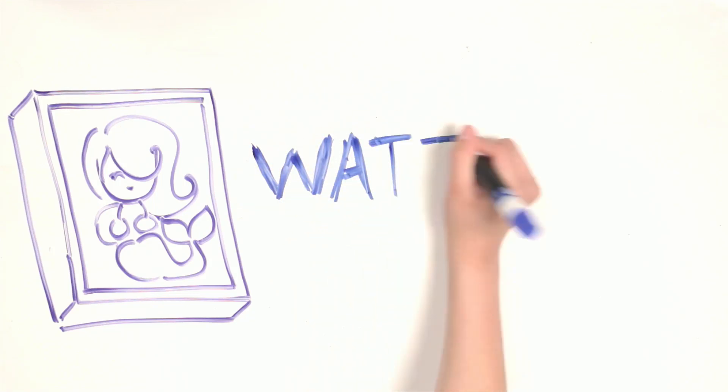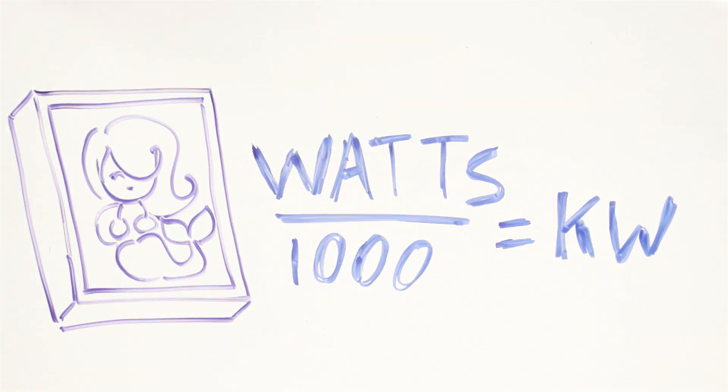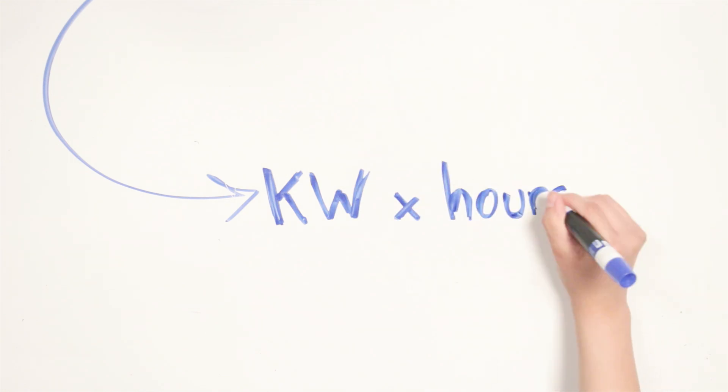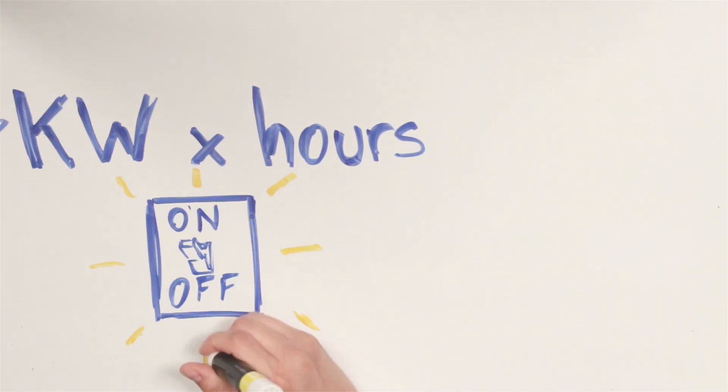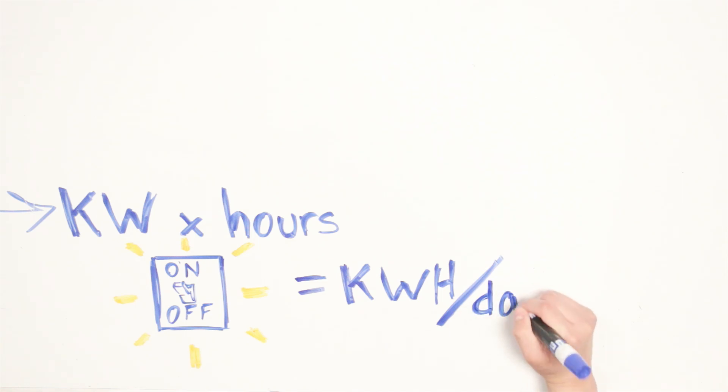First, take the lightbox wattage rating and divide it by 1000 to get the kilowatts value. Then multiply the resulting kilowatts by the number of hours you expect the lightbox to be powered on each day to figure out kilowatt hours per day.